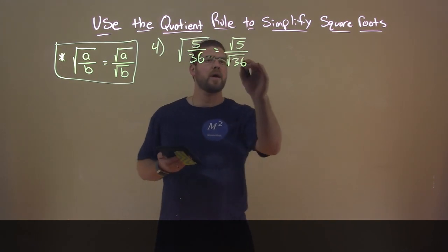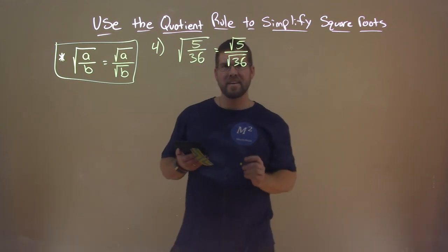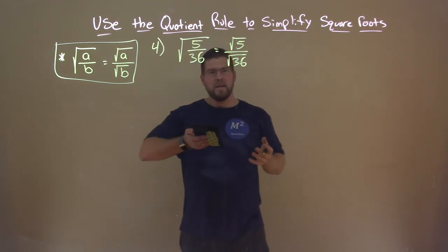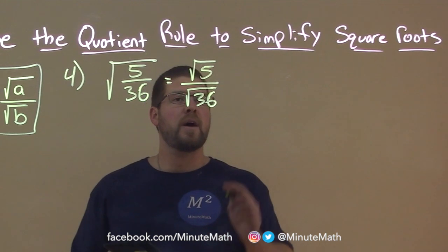So we have the square root of 5 over the square root of 36 here. Alright? There we go. So by doing that, this helps us maybe simplify.